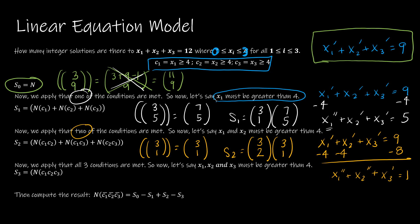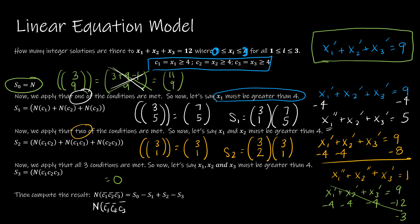If all three conditions are met, we subtract 4 three times from 9, giving a negative value, which is impossible. So S3 = 0. The final PIE solution is: N − S1 + S2 − S3 = C(11,9) − C(3,1)·C(7,5) + C(3,2)·C(3,1) = 55 − 63 + 9.